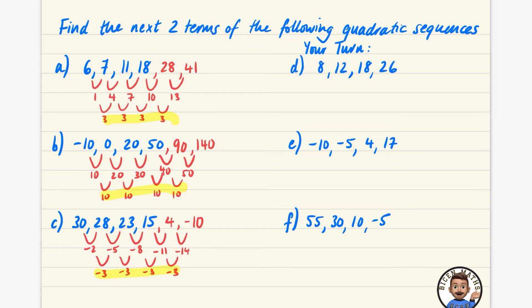Between the 8 and the 12 it's going up 4, then it's going up 6 and it's going up 8. So you can pretty much guess it's going to go up 10 and then 12, meaning it's 36 and 48. Just to confirm, this first difference is increasing by 2 each time.